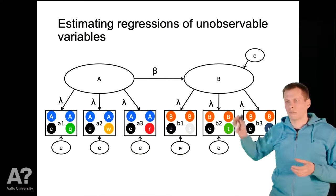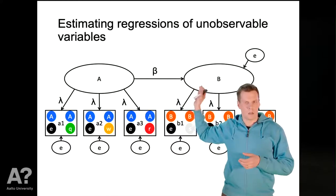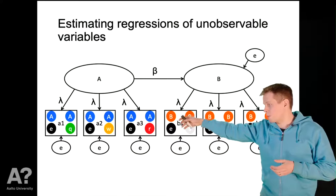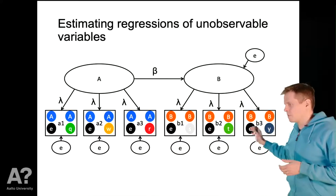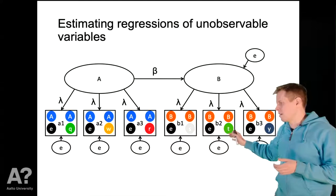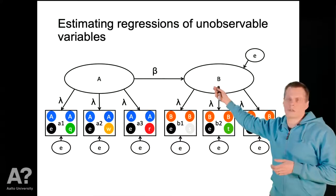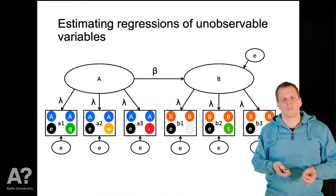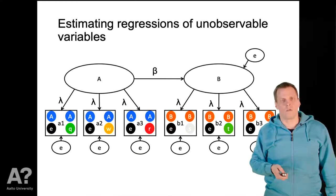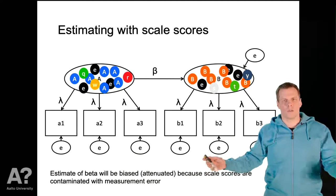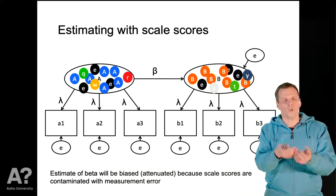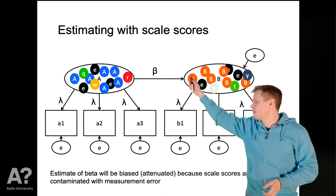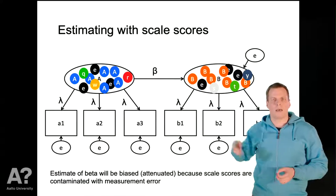The structural regression model has advantages over regression analysis with scale scores. We have concepts A and B represented by latent variables with indicators. The indicators' variance consists of variance due to concept A, variance due to concept B, plus various sources of measurement error variance — random noise and item uniqueness. When we take a sum of these indicators, all sources of variation including measurement errors enter the sum. When we then estimate the regression coefficient beta, the estimate will be attenuated — too small, inconsistent, and biased.